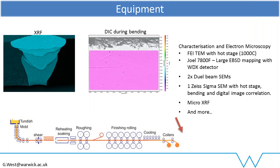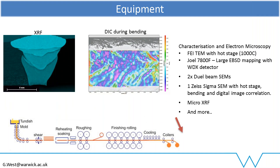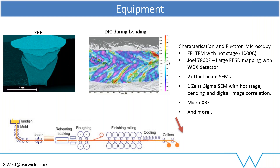Then we go into characterisation. We have a huge range of equipment — SEMs, TEMs, high temperature in-situ bending, large-scale mapping on the XRF, as you can see on the top left. This really gives us the best information about what we're producing and how to exploit that.